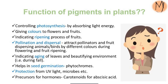Not only giving colors to leaves, but pigments also perform important functions. For instance, pigments control photosynthesis by absorbing light energy, give colors to flowers and fruits, and indicate the ripening process of fruits. Further, pigments help pollination and dispersal by attracting pollinators and fruit-dispersing animals or birds through different colors during flowering and fruit ripening.